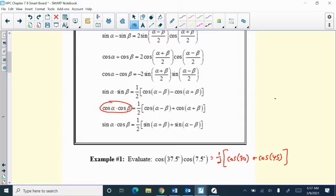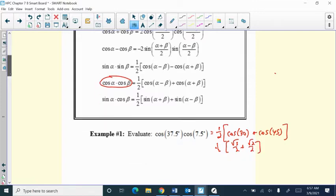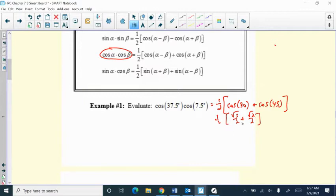plus cosine of alpha plus beta, so 37.5 plus 7.5, which is 45 degrees. In this case it kind of worked out nice because the sum and the difference actually gave us nice values. Cosine of 30 degrees, so that would be the square root of 3 over 2, and then the cosine of 45 is root 2 over 2. Then when we add that up, we would get root 3 plus root 2 over 2, and then times that half. So root 3 plus root 2 over 2, because it's a common denominator, or we can make that into root 3 plus root 2 over 4.